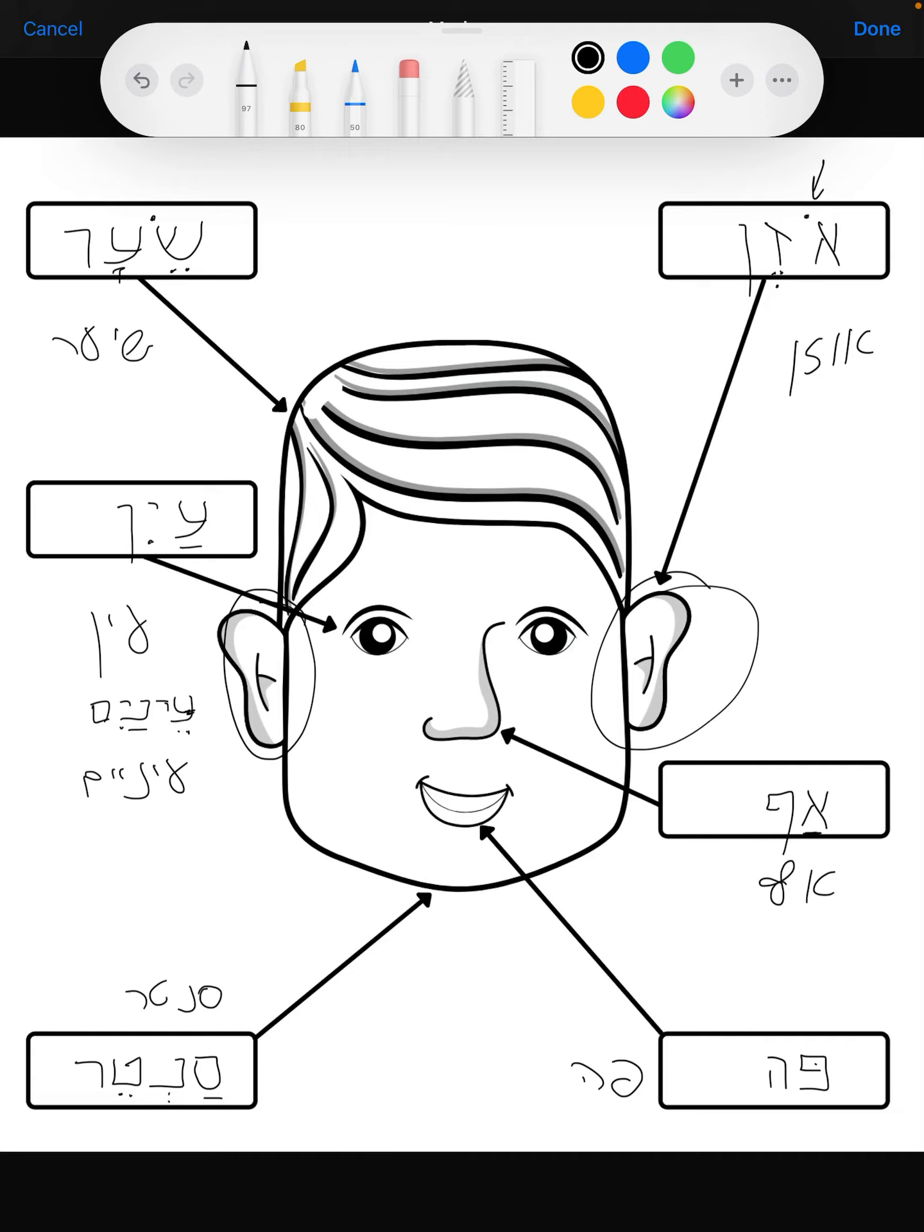But of course we use the plural a lot. So how do we say plural ear? How do we say ears in Hebrew? The answer is ozenaim. So let's write it down.